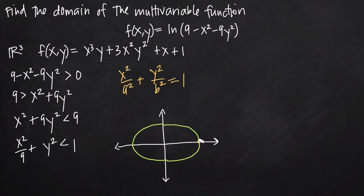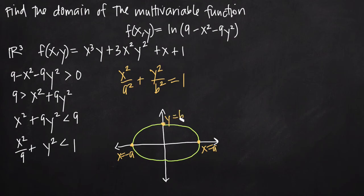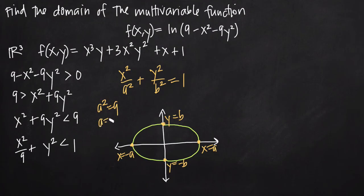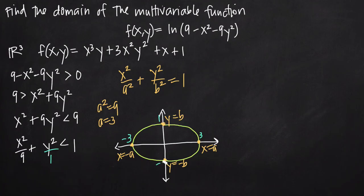The values that define the ellipse: this point is x equals a, this point is x equals negative a, this point is y equals b, and this point is y equals negative b. For our ellipse, a squared equals 9, so a equals 3 — meaning the ellipse crosses the x-axis at 3 and negative 3. For b, we have y squared over 1, so b squared equals 1 and b equals 1 — meaning it crosses the y-axis at 1 and negative 1.